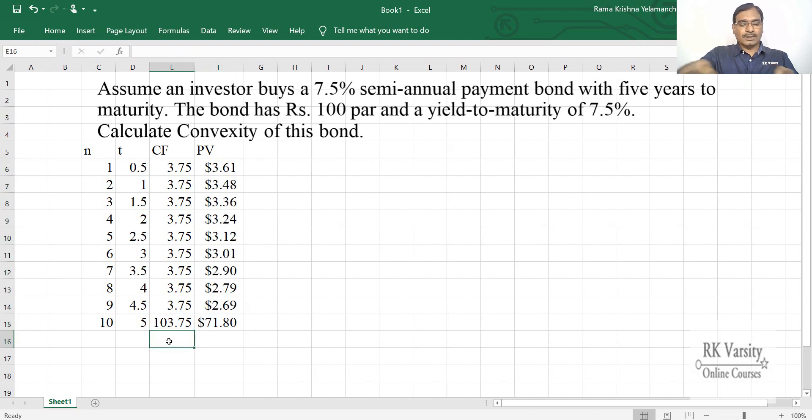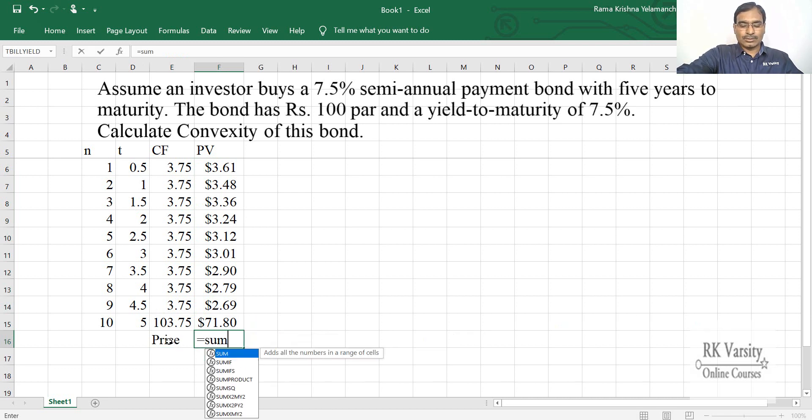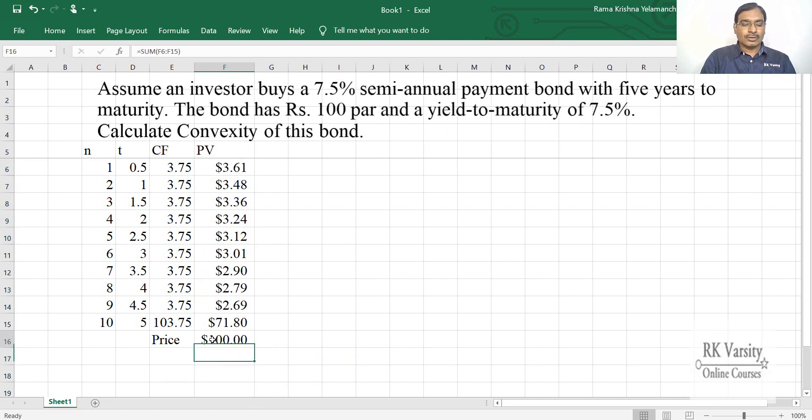Now the summation of this is the price of your bond. So price is equal to sum of all these your cash flows. So $100, here by Excel, by default it is taking as a dollar. Now read this as the rupees. So the price of the bond is Rs.100. Why we are getting a price of the bond Rs.100 is because the coupon payment and yield to maturity, both are same. That is the reason why the price is the same, that is 100.